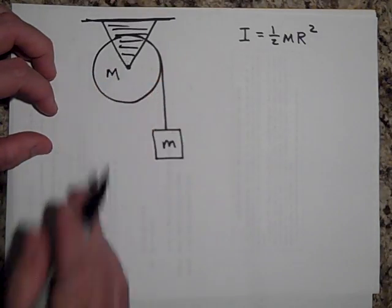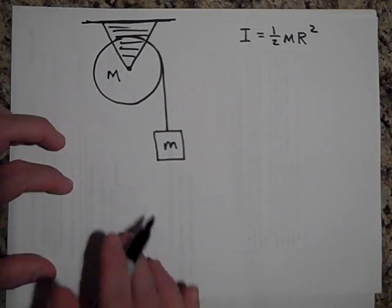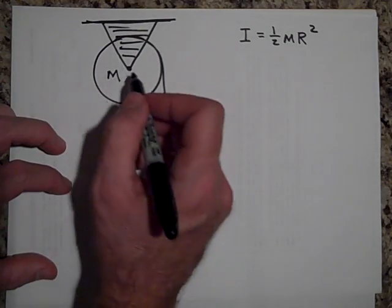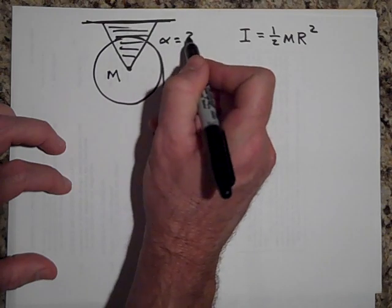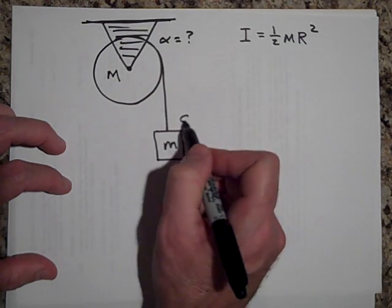And the question is, what will be the acceleration, what will be the alpha of the wheel, and what will be the acceleration of the bucket?